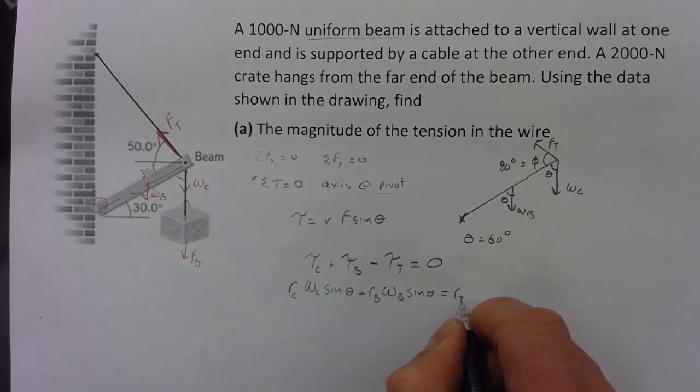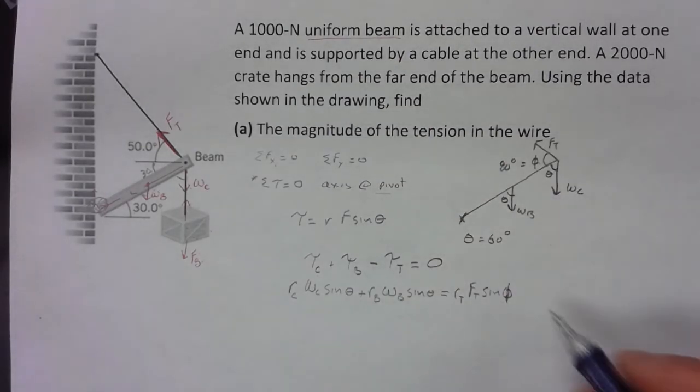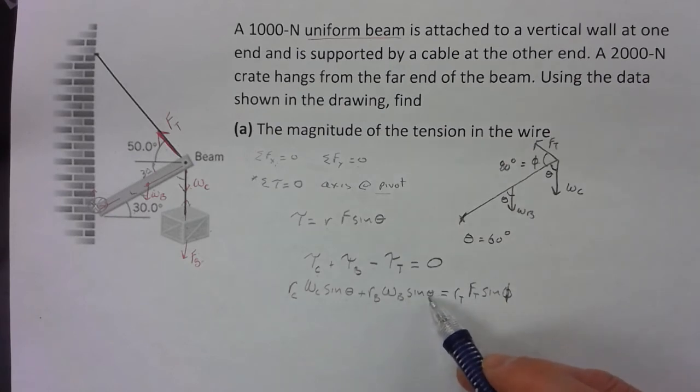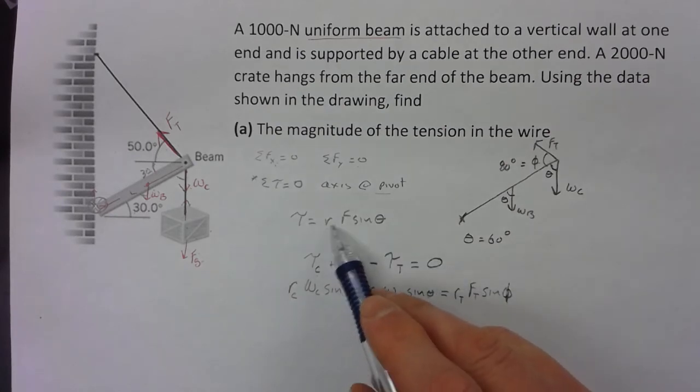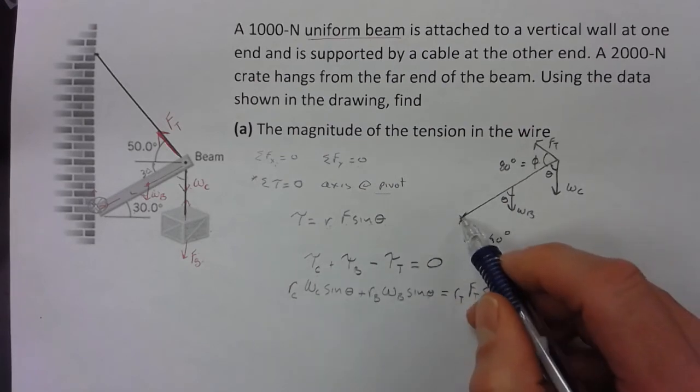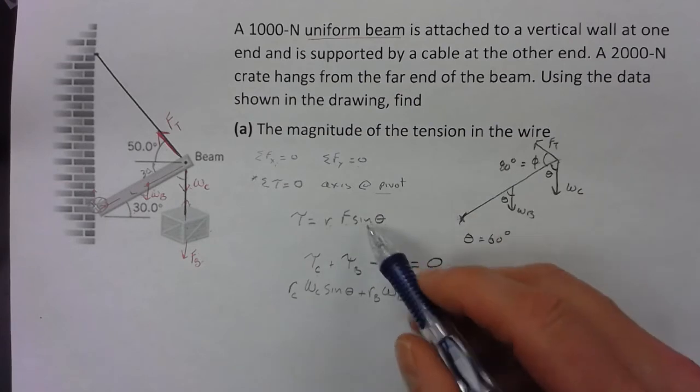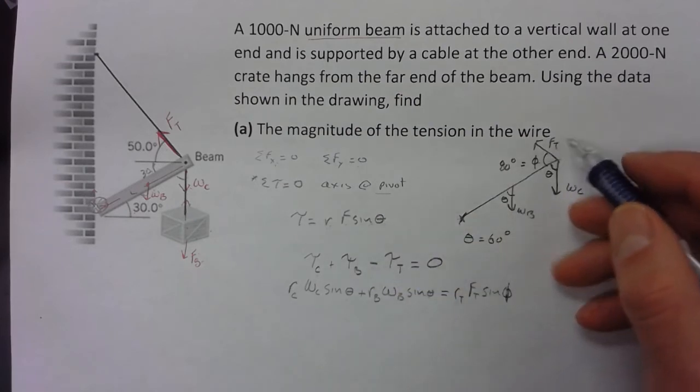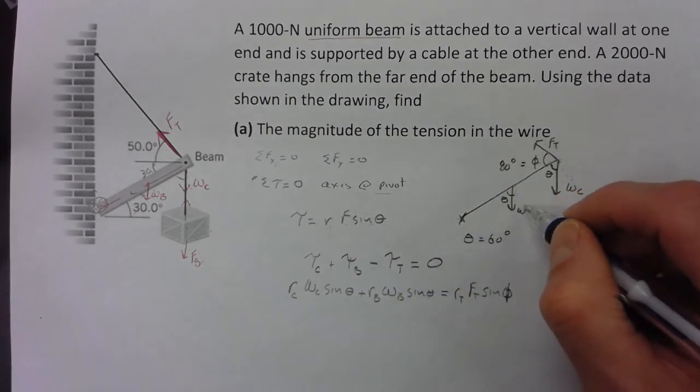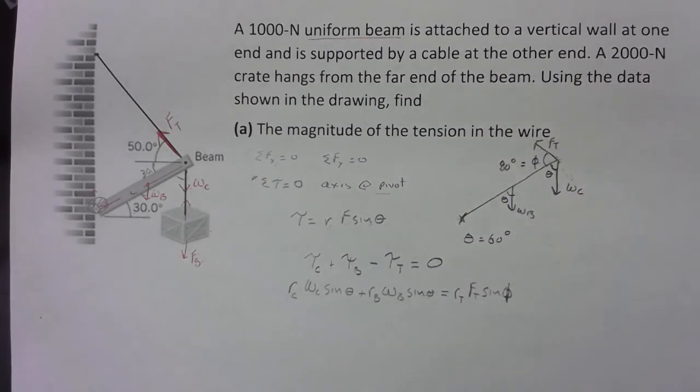And I'll move this over here. It's going to equal the r for my tension, my tension force, and the sine of psi, because that angle is different. This angle in here always has to be the angle—if you're using sine, if you're using r F sine theta, it's got to be the angle between the distance from the axis, the lever arm, and the direction of the force. You don't have to use sine if you have other angles; you need to find the perpendicular component. We can do that in multiple ways, but we're going to stick with this for now.